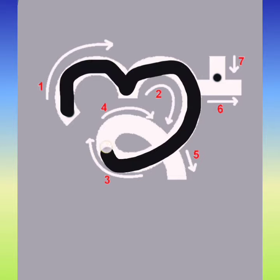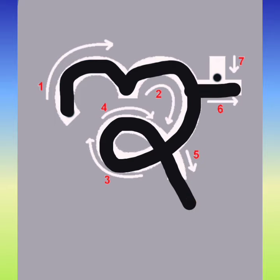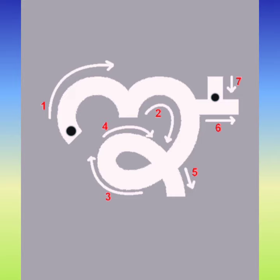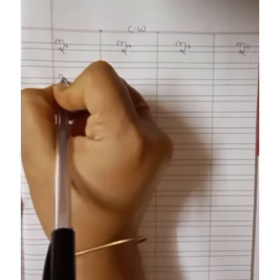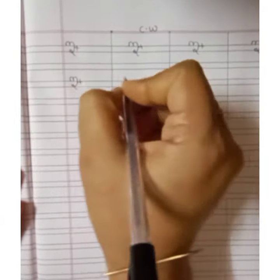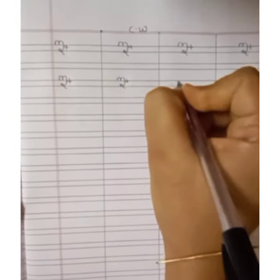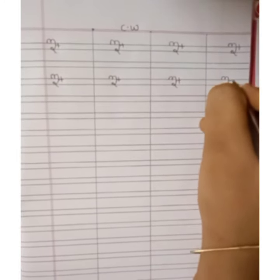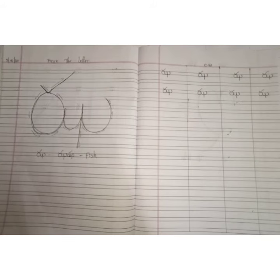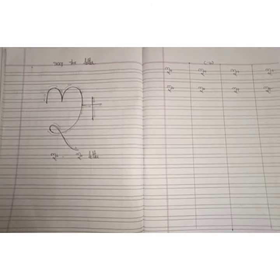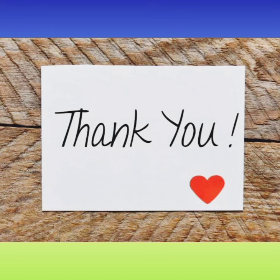Now see the next letter — Inae. This is the Inae letter. Please trace the two letters: Jha — jhasham, fish, and the Inae letter. Do the homework in your reader, page number 22. Thank you, children.